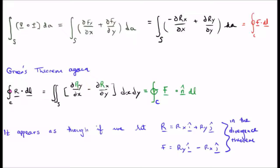It appears, and if you look closely, it appears that if we were to say that the vector field r, which is equal to r sub x i hat plus r sub y j hat, is related to the vector field F by saying F is equal to r sub y i hat minus r sub x j hat, we will make some progress.